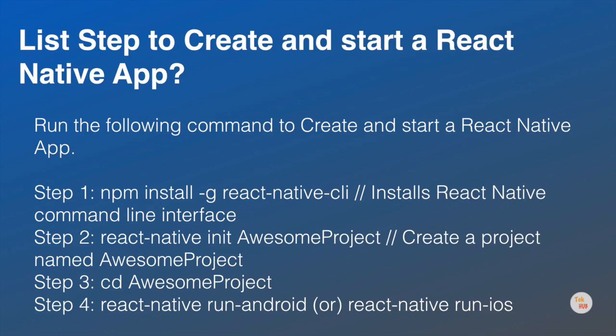Next question is: List the steps to create and start a React Native app. Run the following commands in terminal. Step 1: npm install -g react-native-cli. This command will install the React Native command line interface globally through npm. Also please make sure Node and Watchman are installed on your computer. Step 2: react-native init AwesomeProject. This command will create a project named AwesomeProject. You can mention your project's name instead of AwesomeProject in the command.